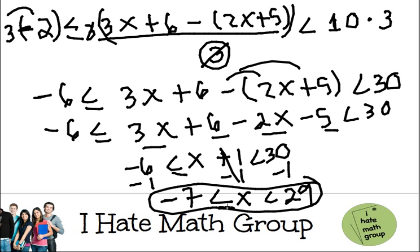In plain English, this is how you read it: x is between negative 7, included, and 29, not included.